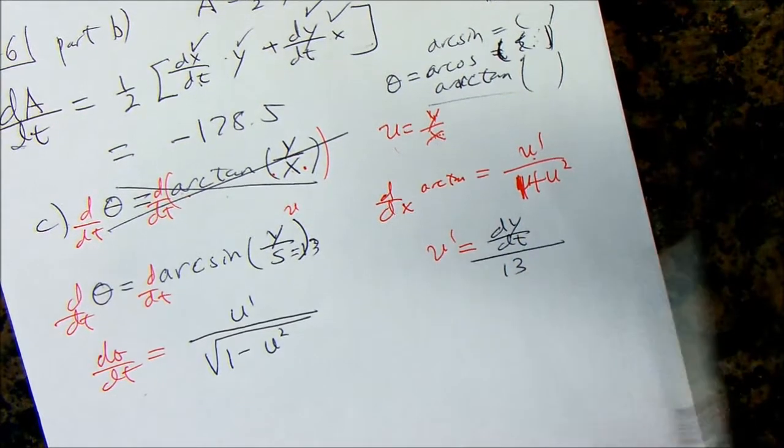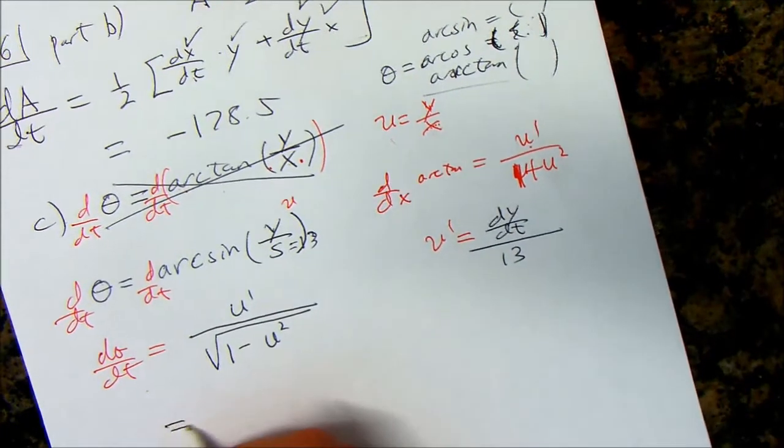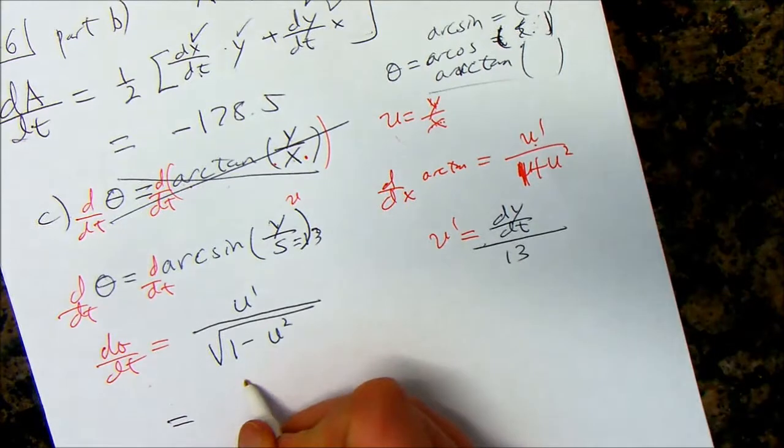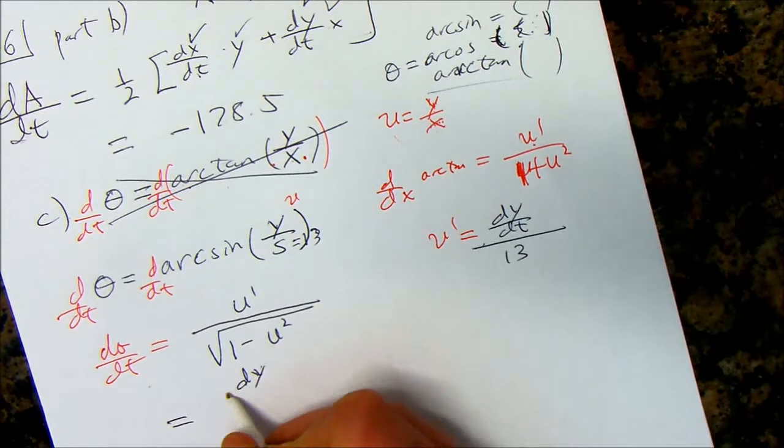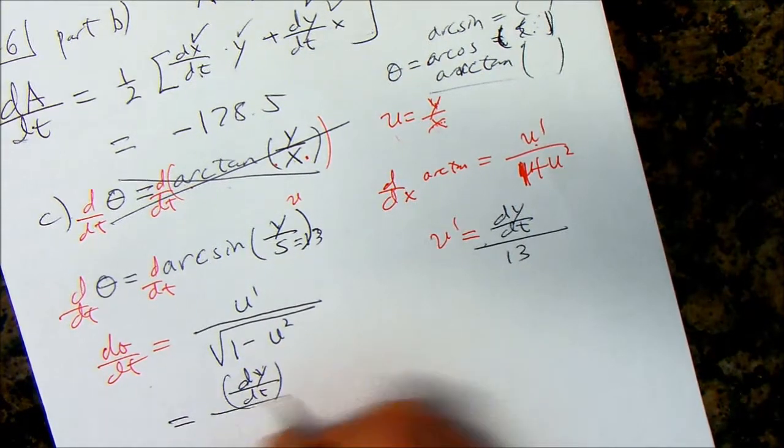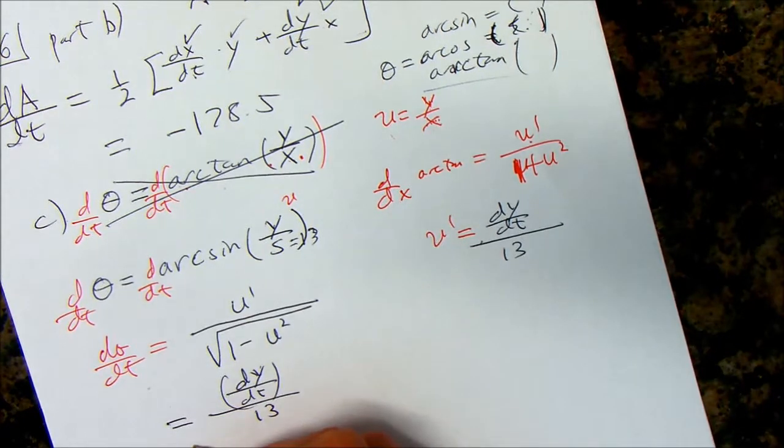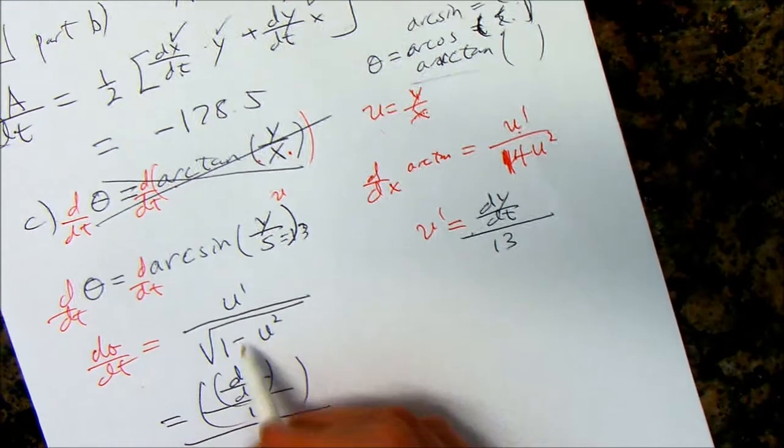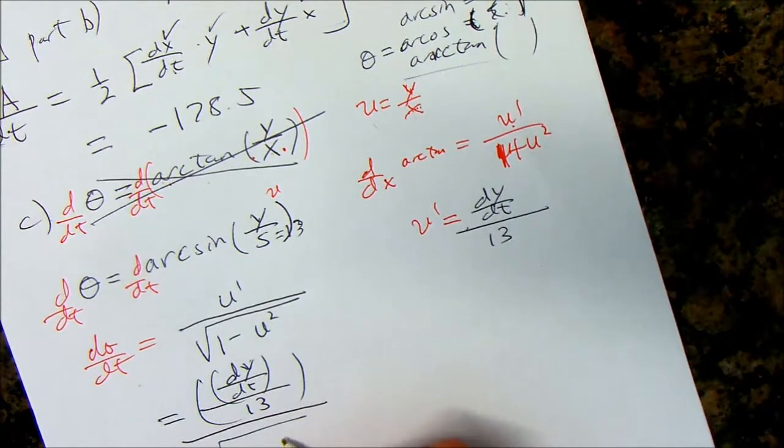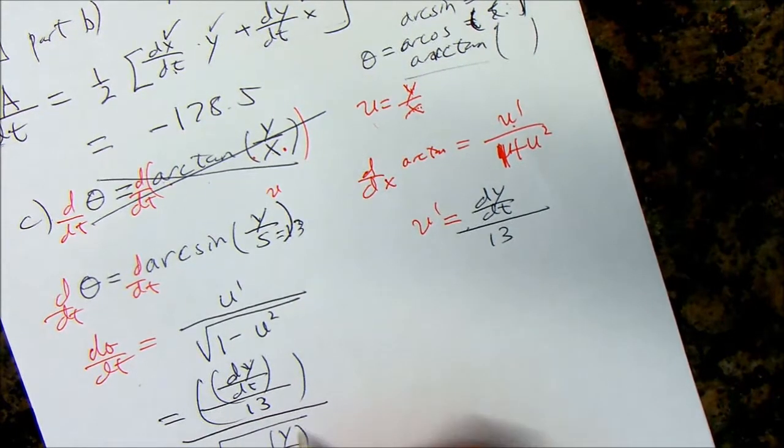So, d/dt on both sides, and this becomes d theta/dt is equal to, and then this is my u. So, u prime, the formula for arc sine is u prime over the square root of 1 minus u squared, right? So, u prime is just going to be dy/dt over s, which is a constant 13.